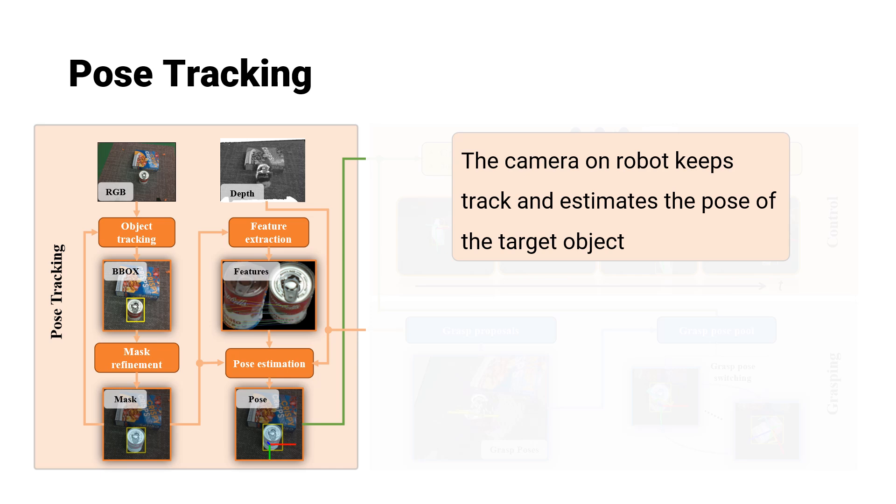Feature extraction is then conducted on the RGB image in conjunction with depth information. These features serve as inputs for a pose estimation algorithm, which continuously predicts the object's pose relative to the initial frame.